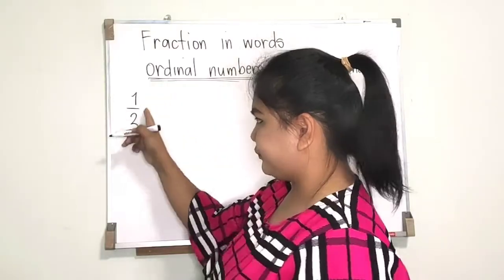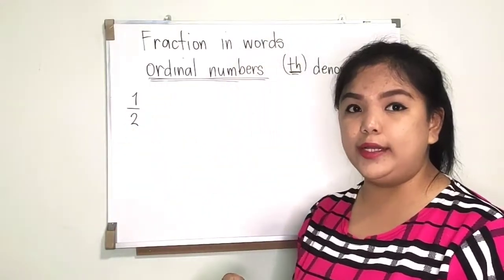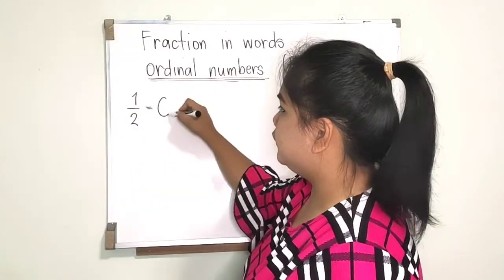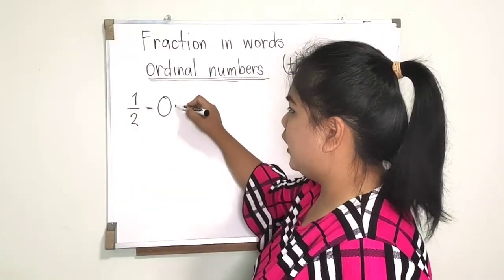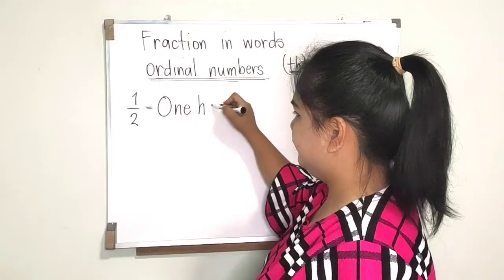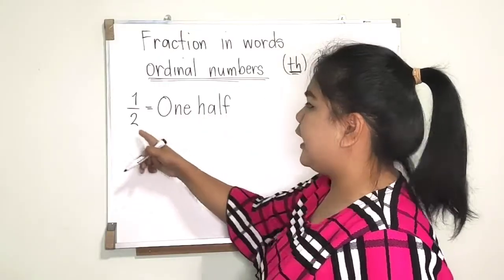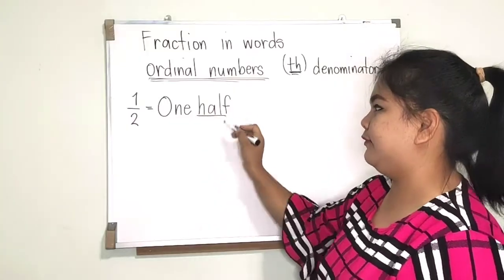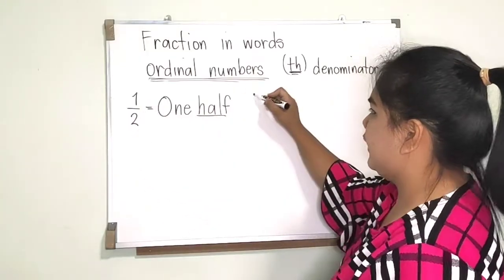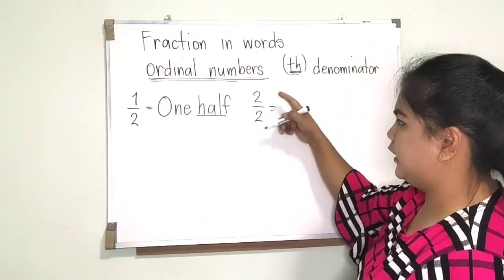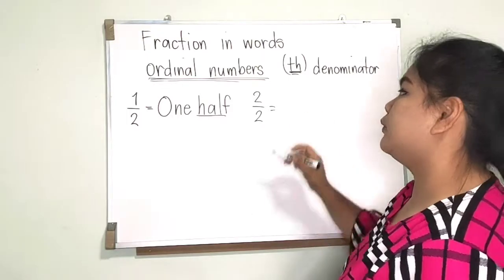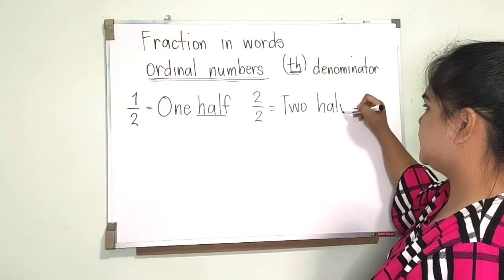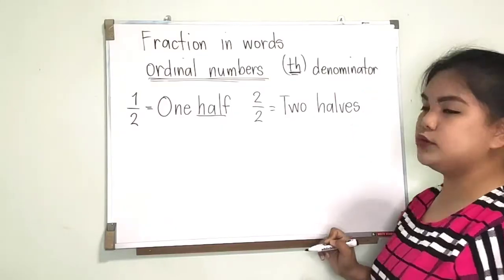For example, we have one half. If you are going to write it into words, it will be 'one half.' It has its own word, which is 'half.' So if we are going to write two over two, this one is written as 'two halves.'